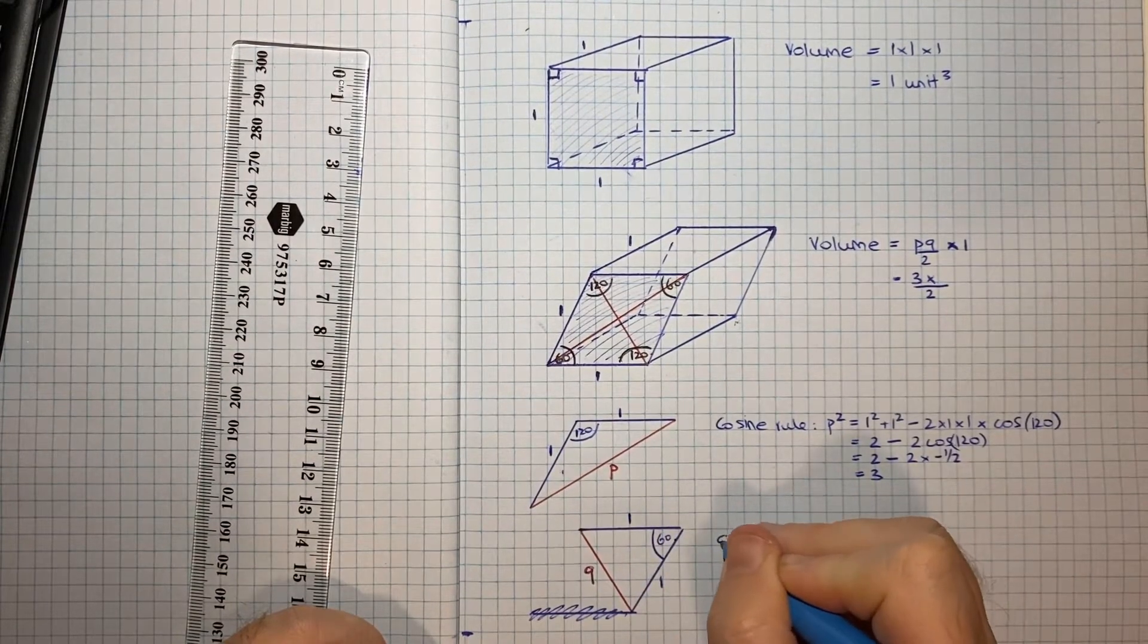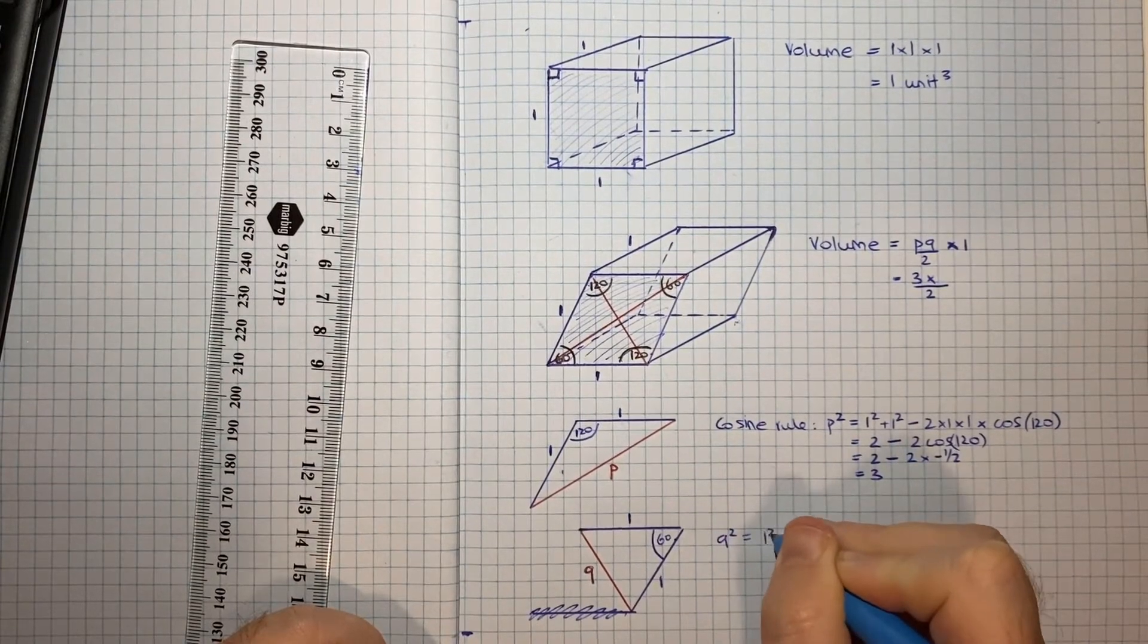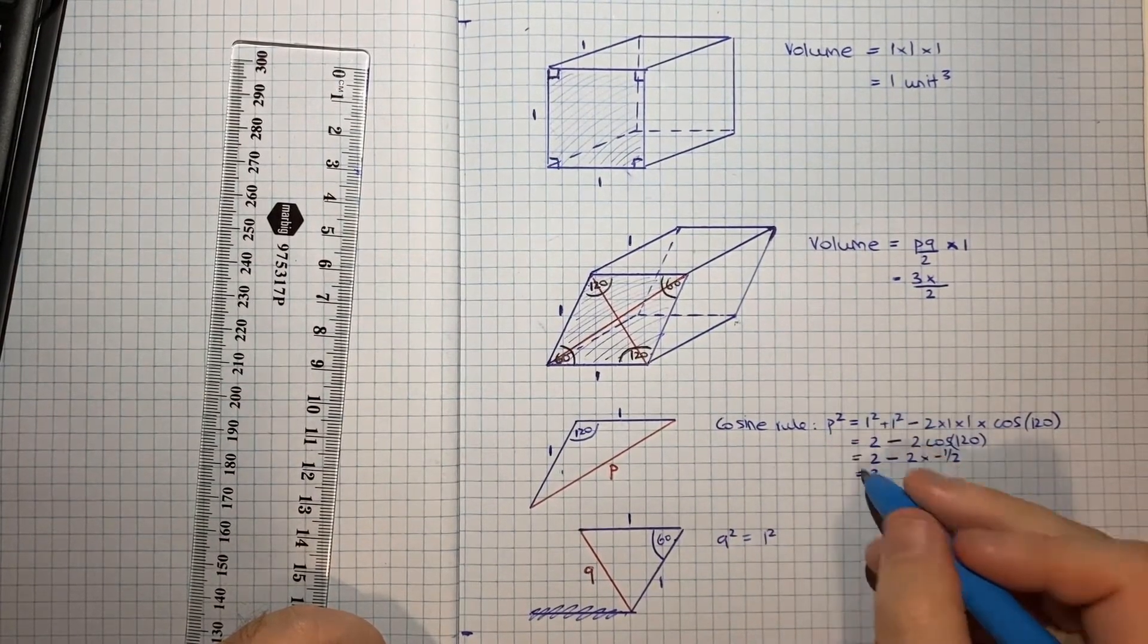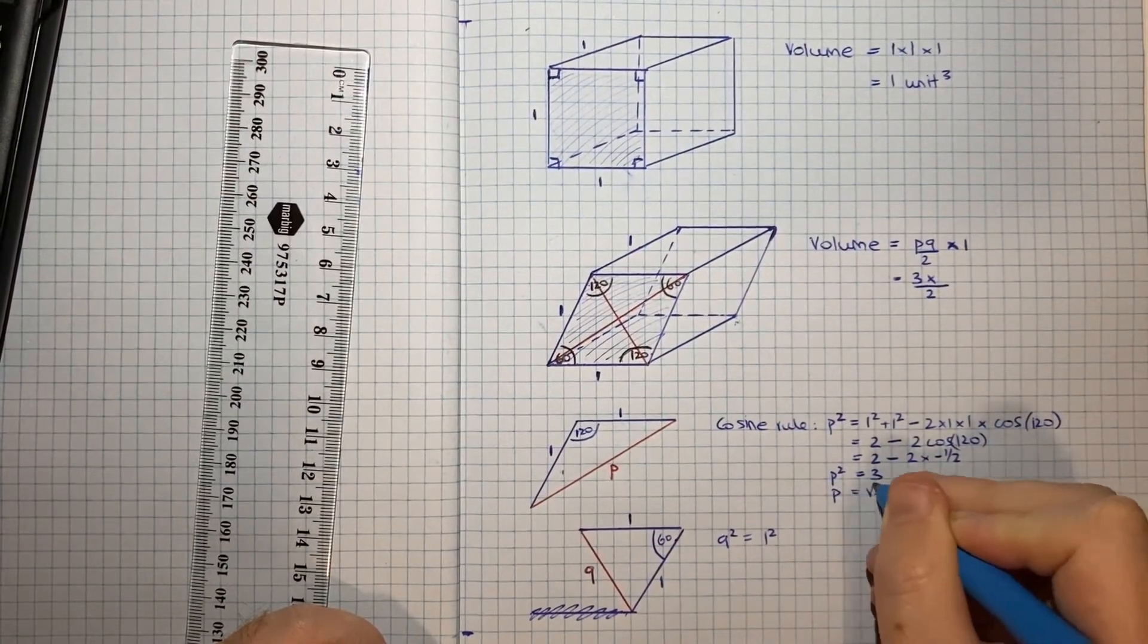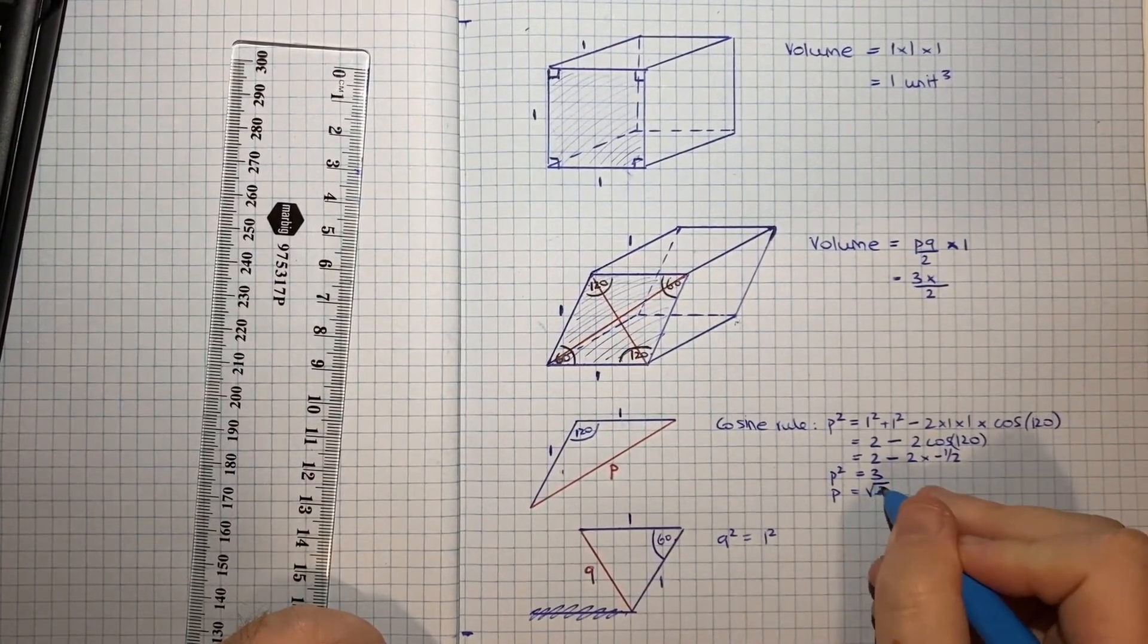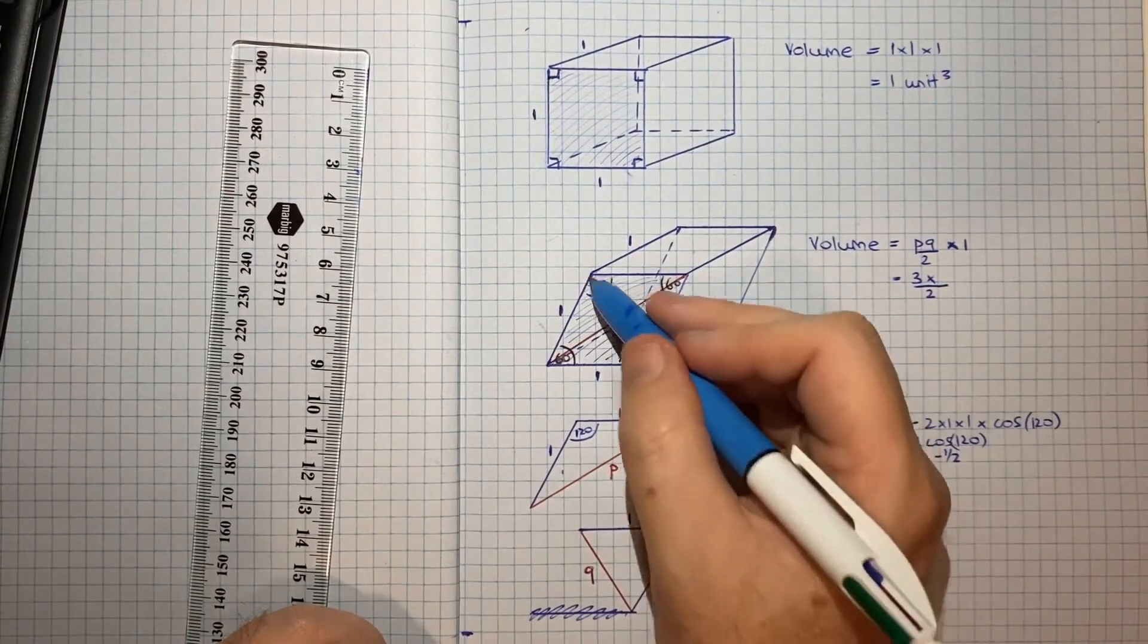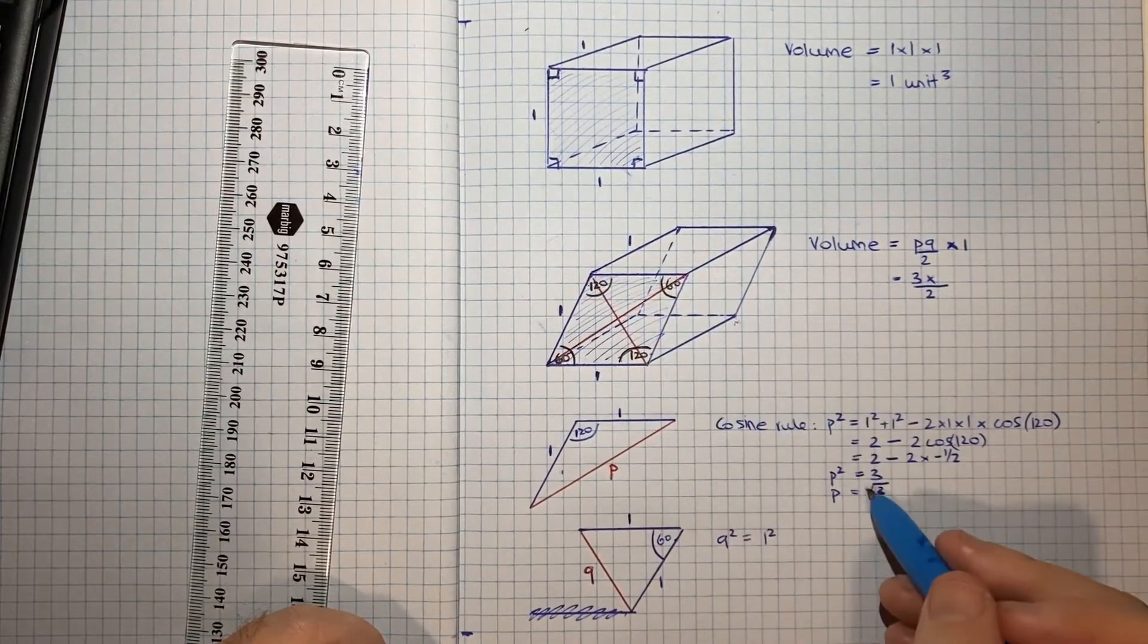I can use the cosine rule again. So we'll get Q squared equals 1 squared. And sorry, that's P squared is equal to 3. So that means P is equal to root 3. And we only take the positive square root because we're looking at the length. So we're only concerned with the positive line.